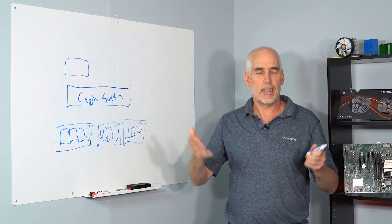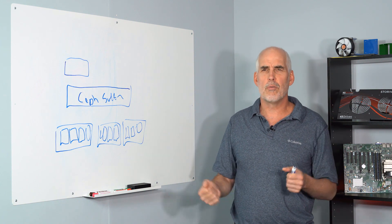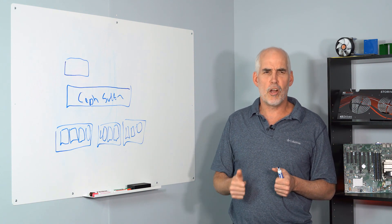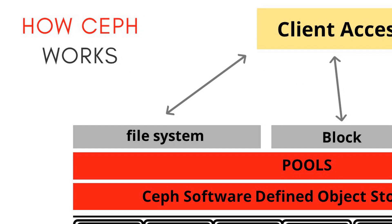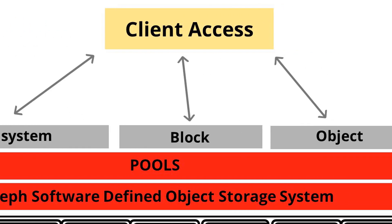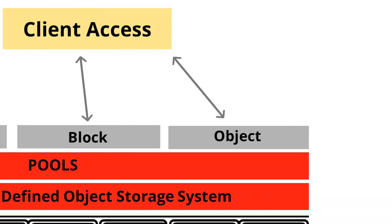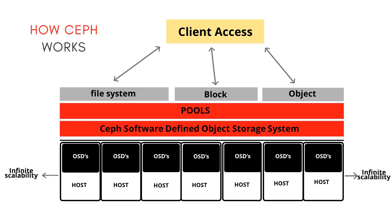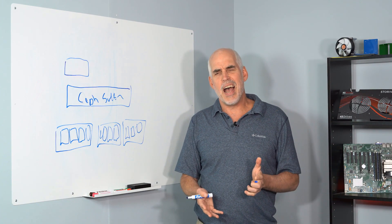How can it share? A whole bunch of different ways. It can share by a file system - we can run a file system on top of that pool. We can run block access on it, so iSCSI to enable iSCSI. The other thing we can do is we can actually store objects on it.